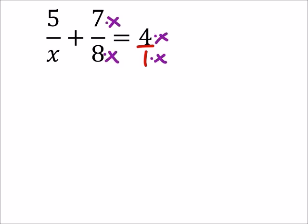Like this. The x is also missing this eight, same with this one-x right here, so I'll have to multiply the x by eight, and I'll multiply this one-x by eight as well, and I'll do it in the numerators also.